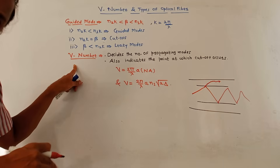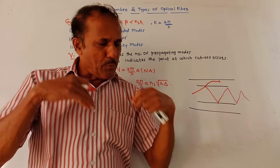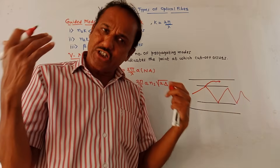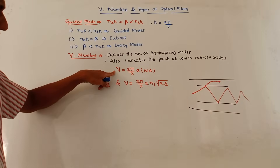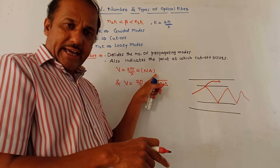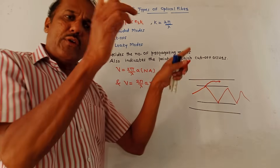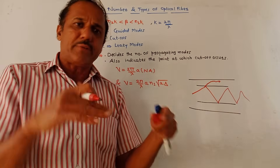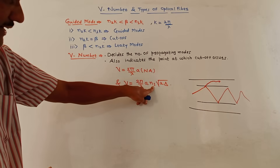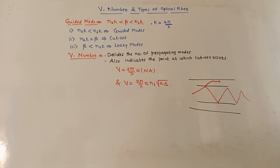There is one particular number related to fiber optic cable called the V number. This number decides the total number of propagating modes in the fiber optic cable and also indicates the point at which the cutoff condition starts. The mathematical equation for V number is: V = (2π/λ) × a × NA, where a is the radius of the core layer and NA is the numerical aperture. Or in terms of delta, the relative refractive index difference between core and cladding: V = (2π/λ) × a × N1 × √(2Δ).